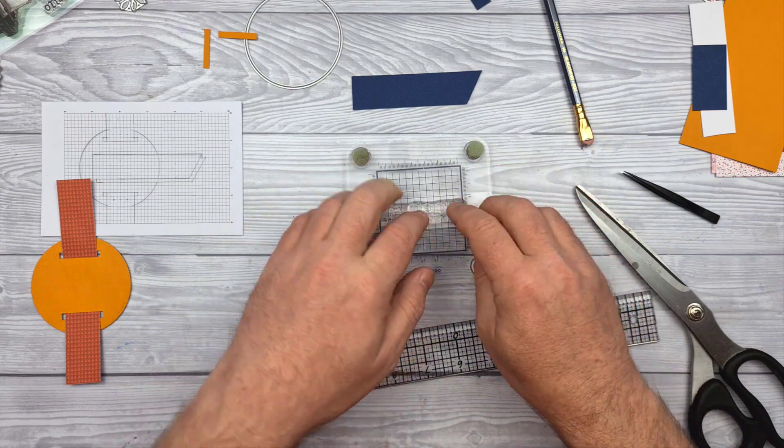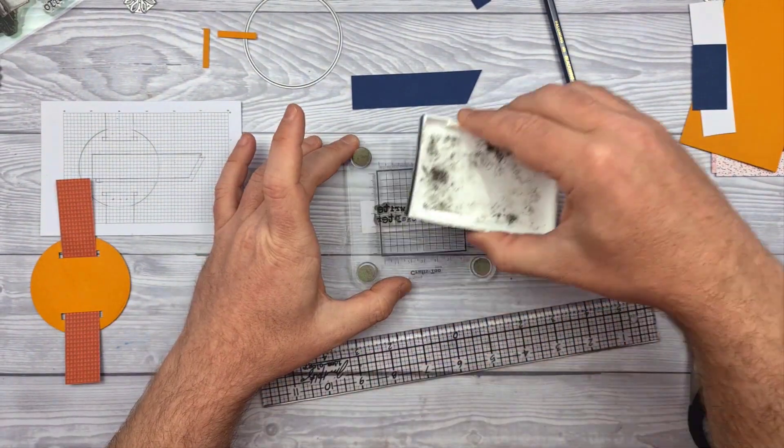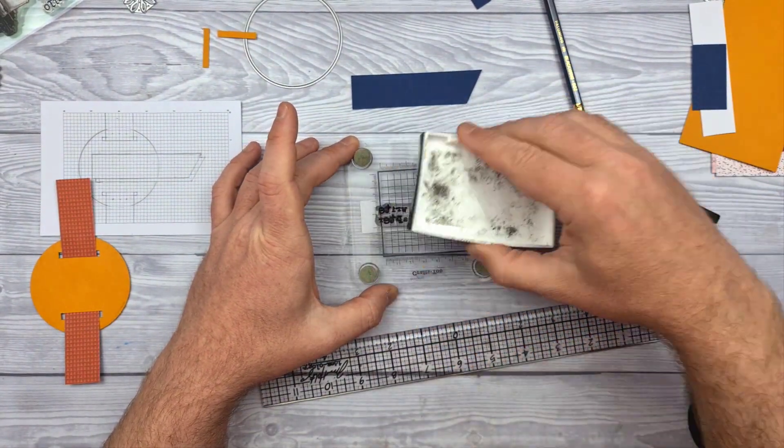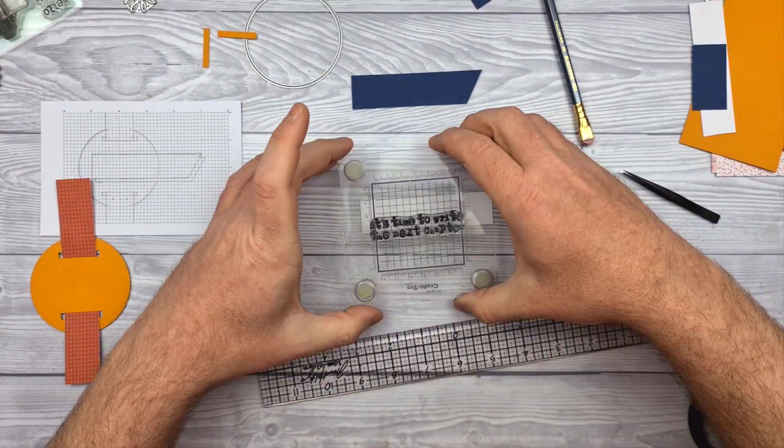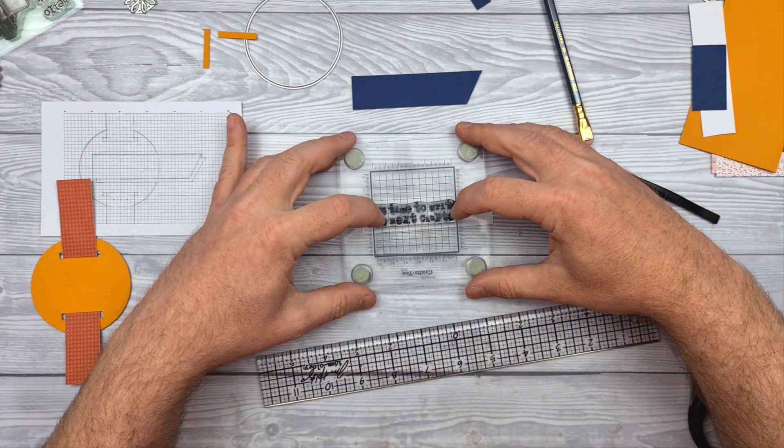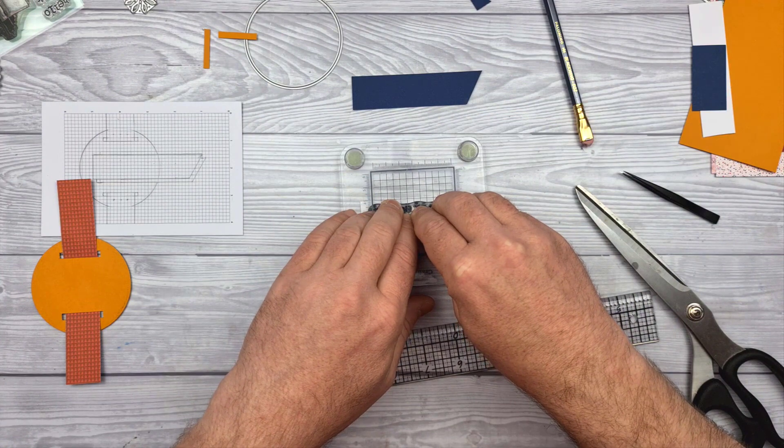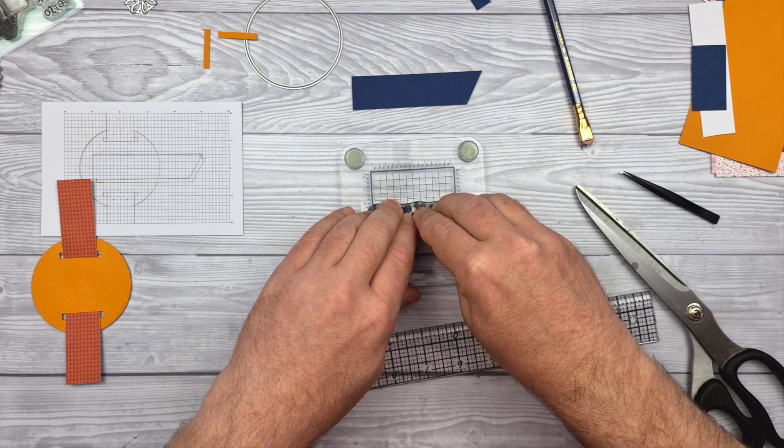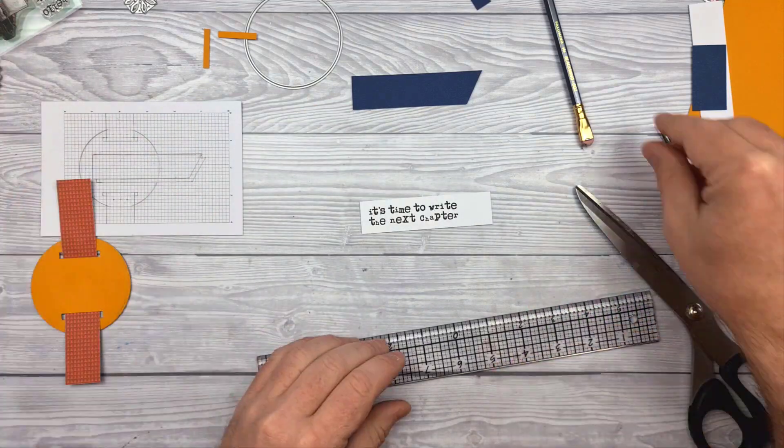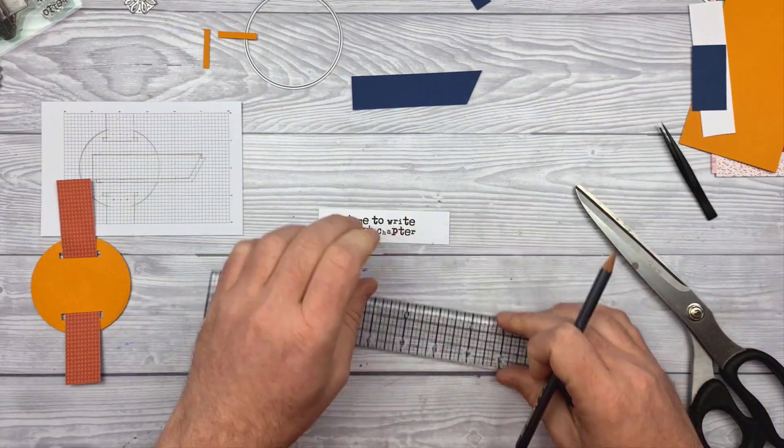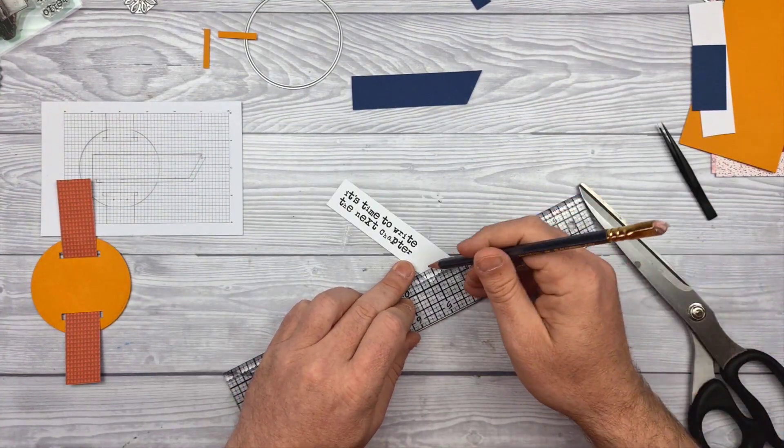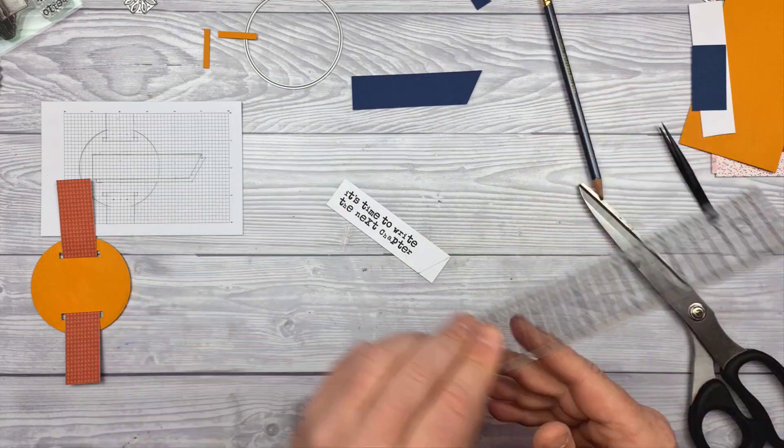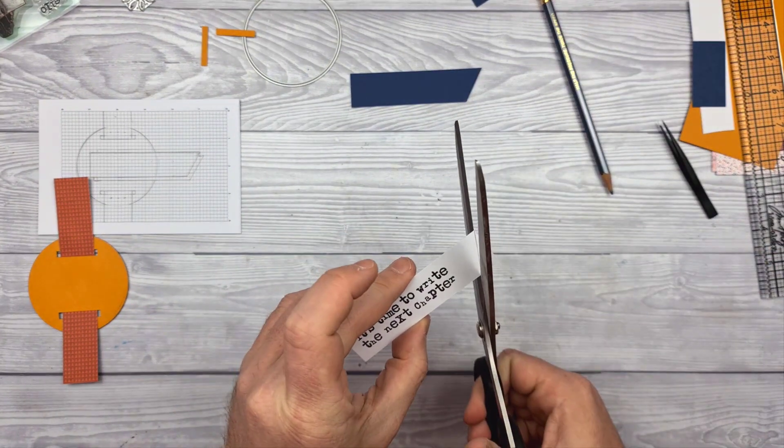For the stamp I'm mounting it on a stamping platform or block or whatever you want to call it really. Inking it up and stamping it onto the white cardstock strip. Keeping in mind that I will be chopping off that angular bit at the end as well. Maybe it would have made sense to chop that off before, but you know, sometimes we go into autopilot mode.